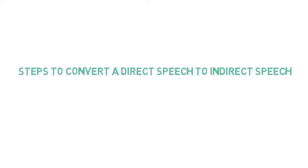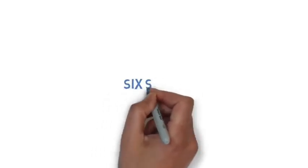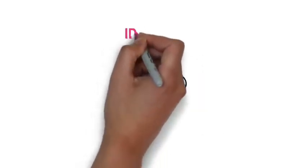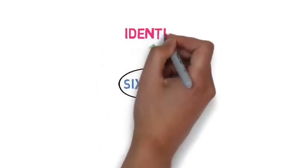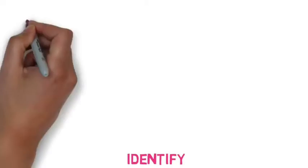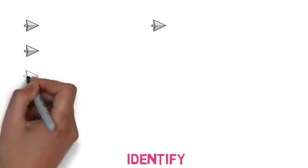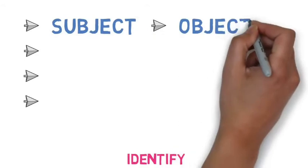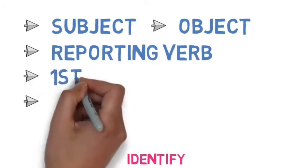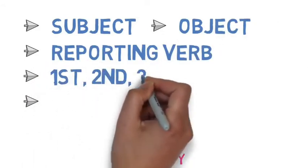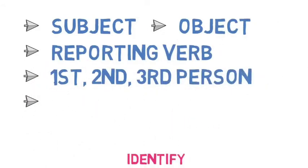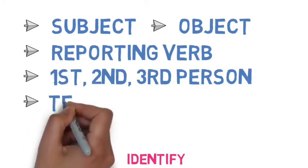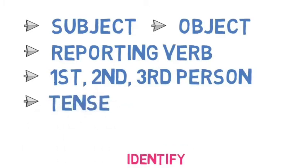Now let's understand the steps to convert a direct speech to indirect speech for statements or simple sentences. The first step is to identify — this is the most important step. You need to identify five things: subject, object, reporting verb, first person, second person, and third person in the reported speech. And if the reporting verb is in the past form, then also the tense of the reported speech.